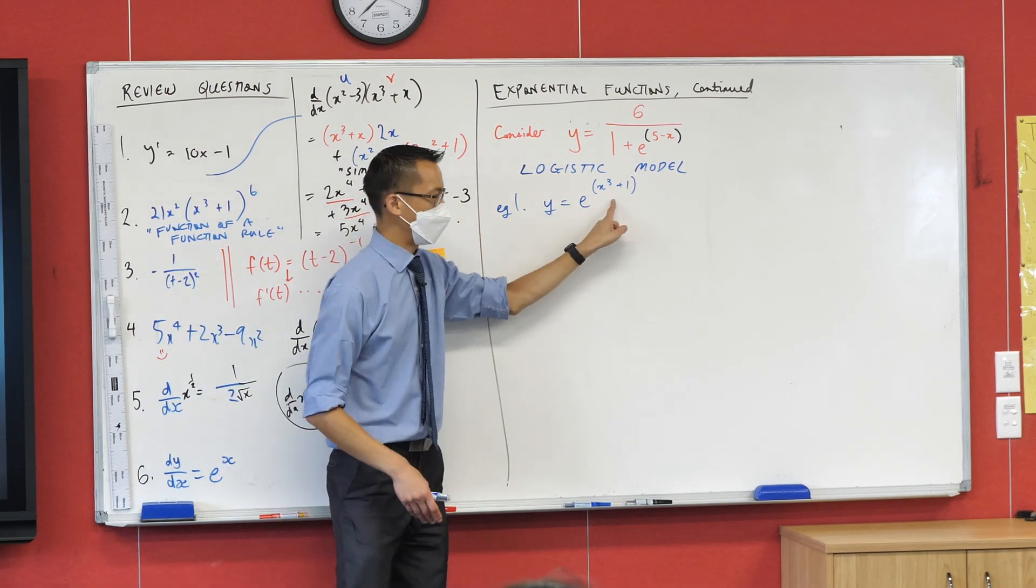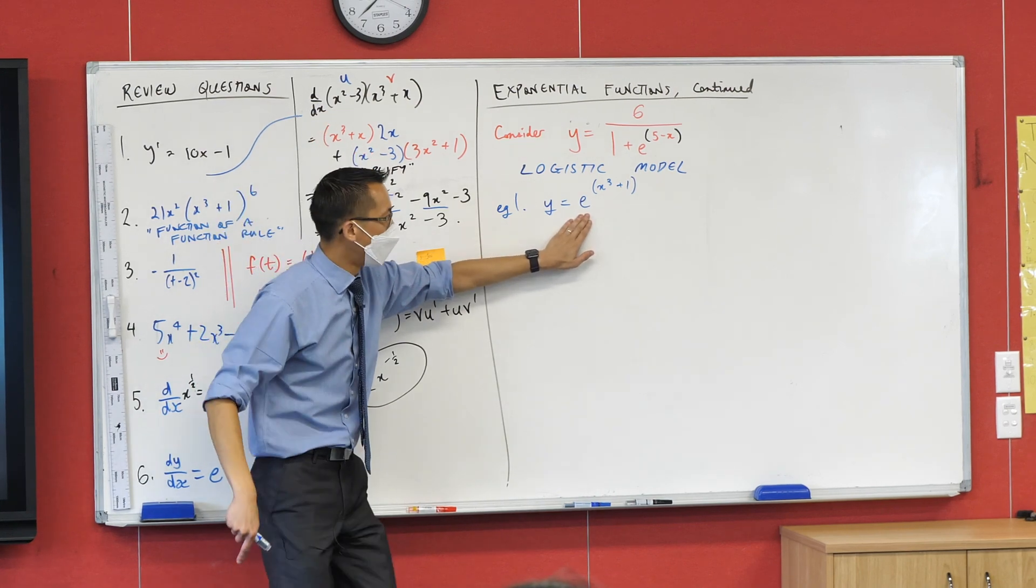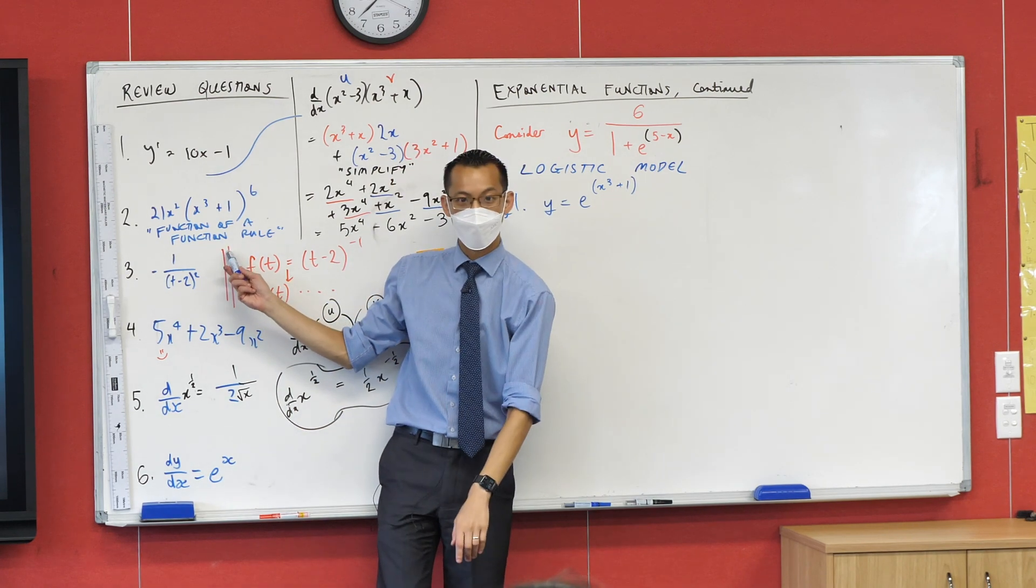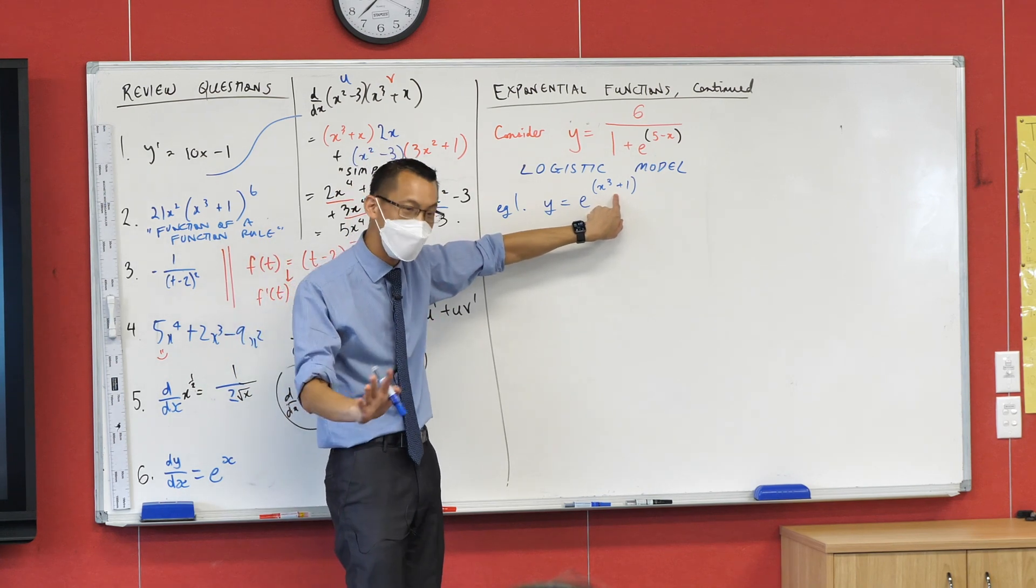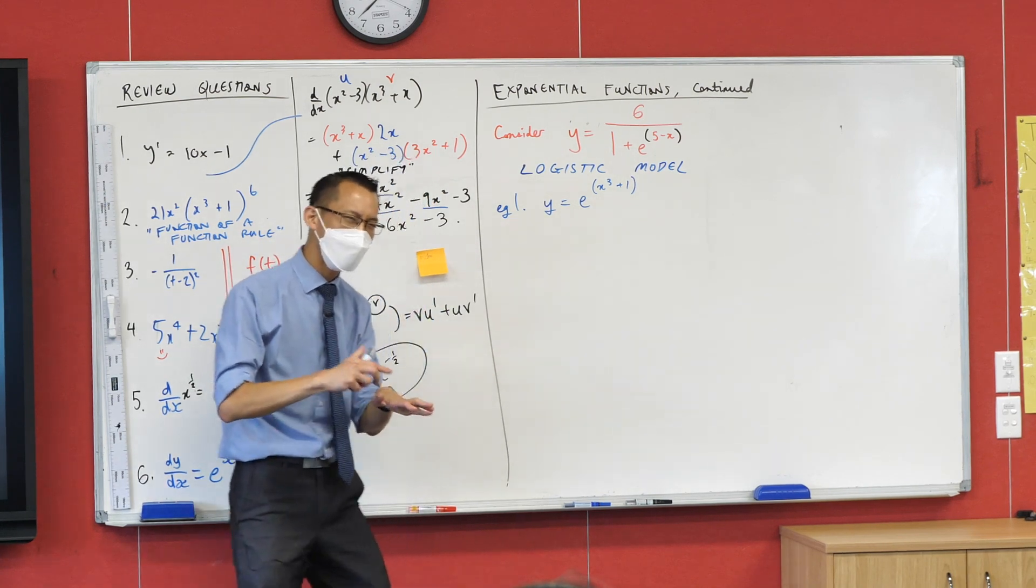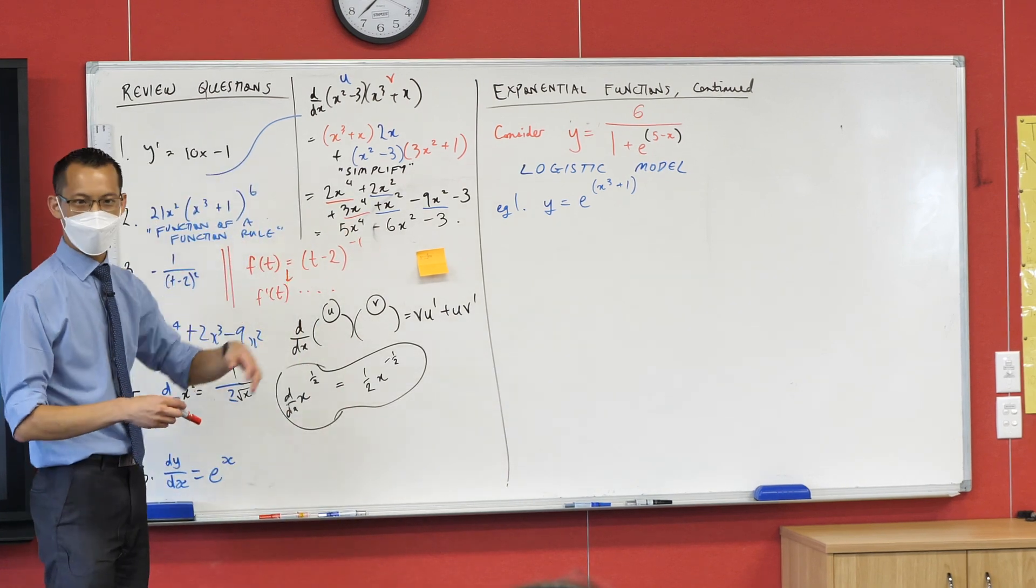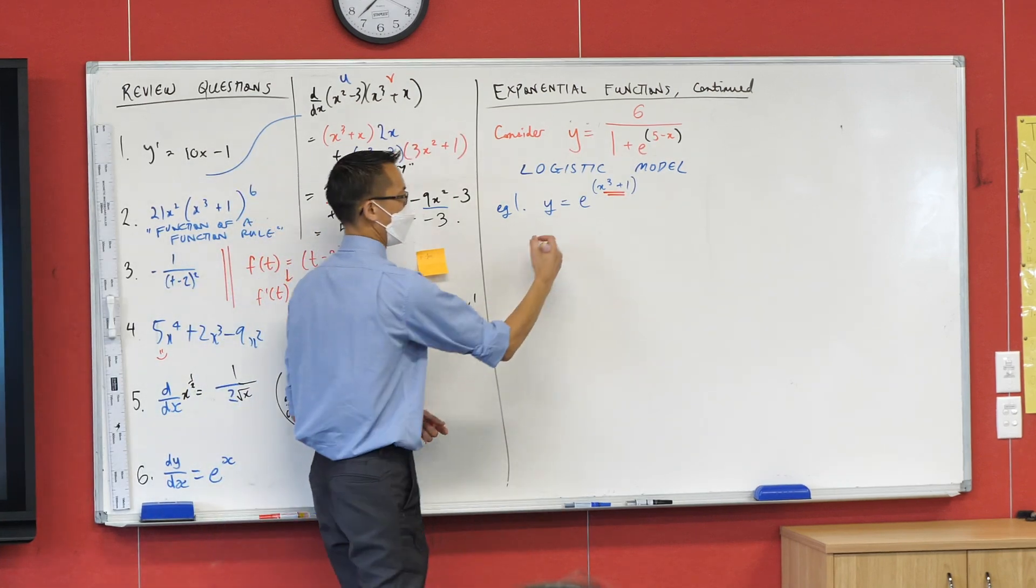So this actually shares a lot in common with this question here. This e to the power of stuff - this is a function e to the power of stuff over another function. That's why I highlighted this name before. So therefore I can treat this the same way I treated this. I can use exactly the same technique. To make it a little more obvious we're going to write a bit of working underneath here to clarify what's going on.